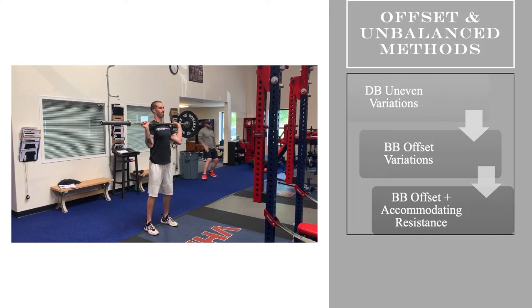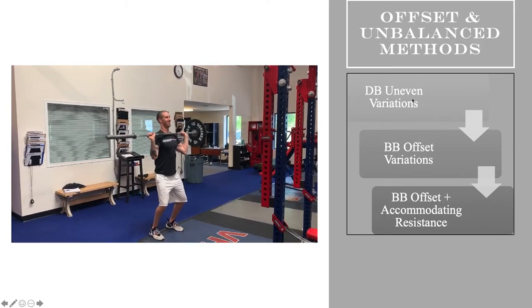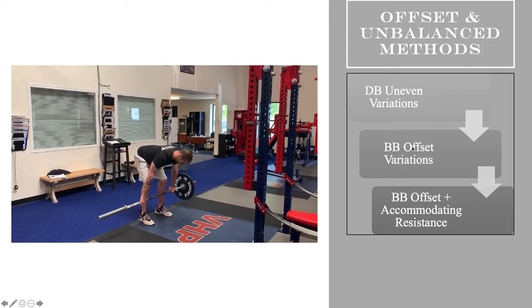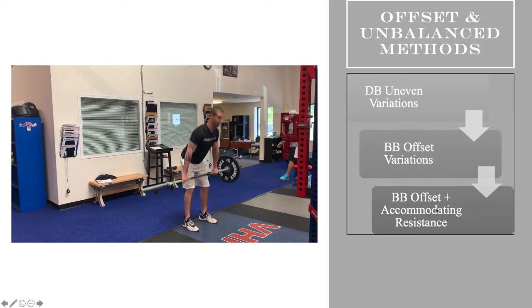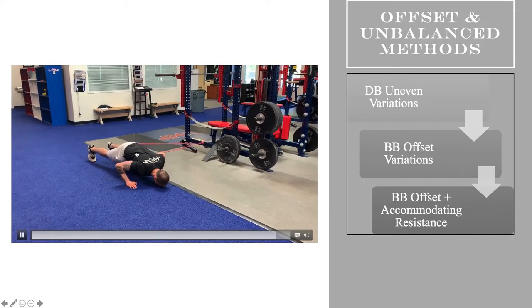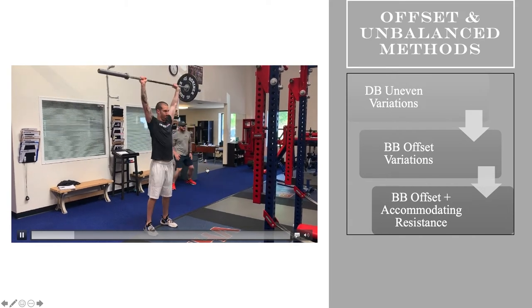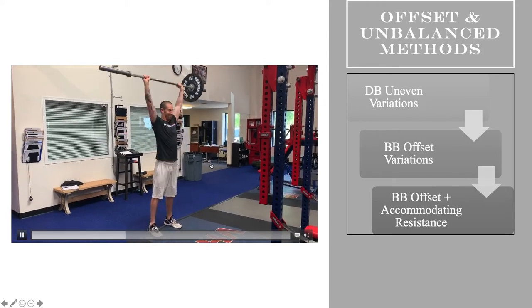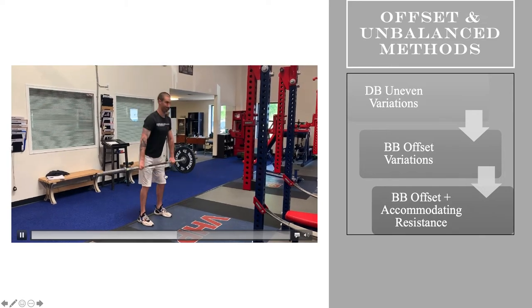Looking at offset and unbalanced methods: always start with dumbbells or kettlebells to give athletes independent control of each hand, then bring it to a barbell, then add offset plus accommodating resistance as a tertiary step. Band offset push-ups are great for the anterior and posterior chain. For those with limited time and resources, instead of just programming an overhead press for your second or third block, add an offset overhead press — take the emphasis off the amount of weight and put it on maintaining good position and control.